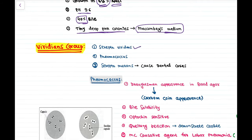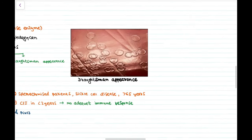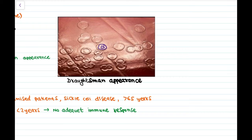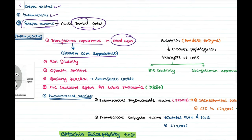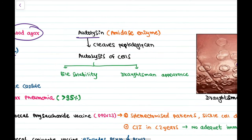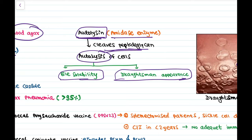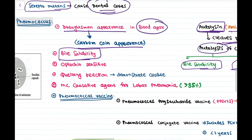The viridans group contains Streptococcus viridans, Pneumococcus, and Streptococcus mutans. Streptococcus mutans is responsible for dental caries. Pneumococcus shows a 'draughtsman appearance' on blood agar, also called carom coin appearance. It is bile soluble due to autolysin (amidase enzyme) which cleaves peptidoglycan, leading to autolysis — responsible for both bile solubility and draughtsman appearance.